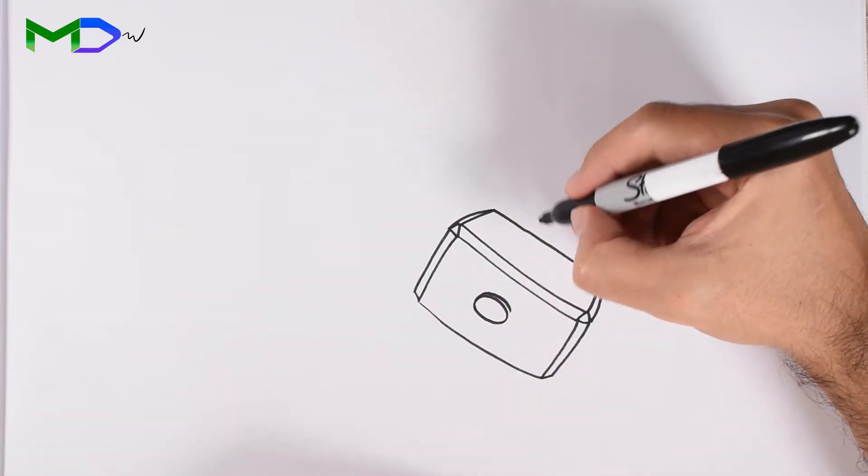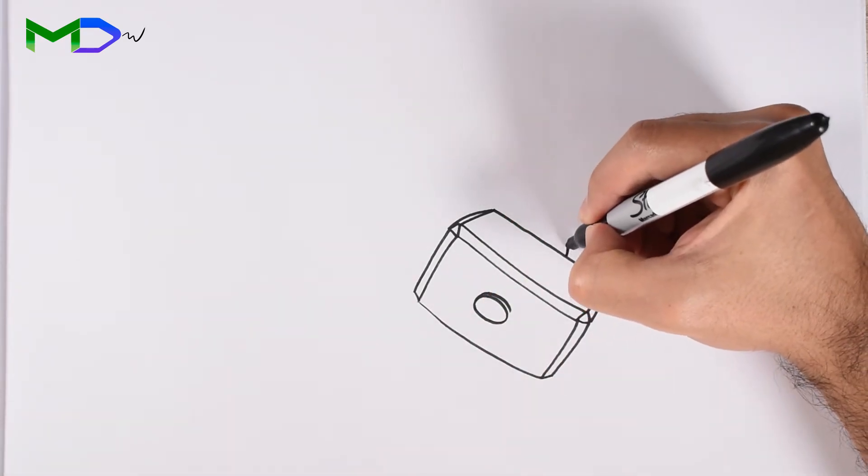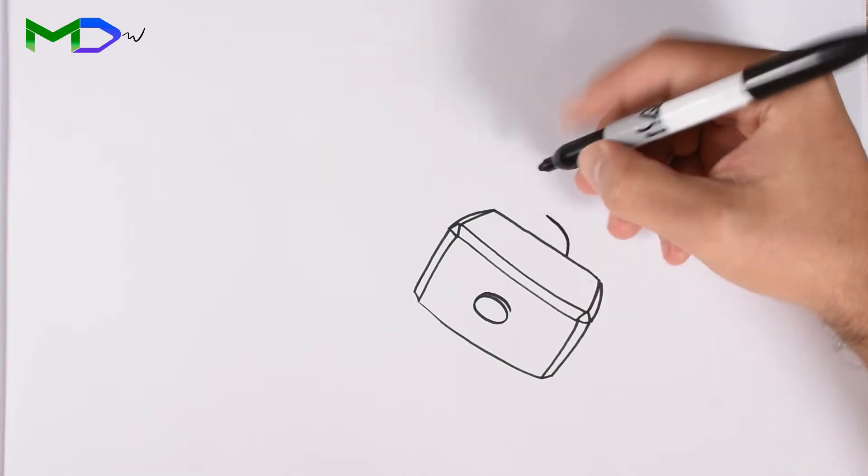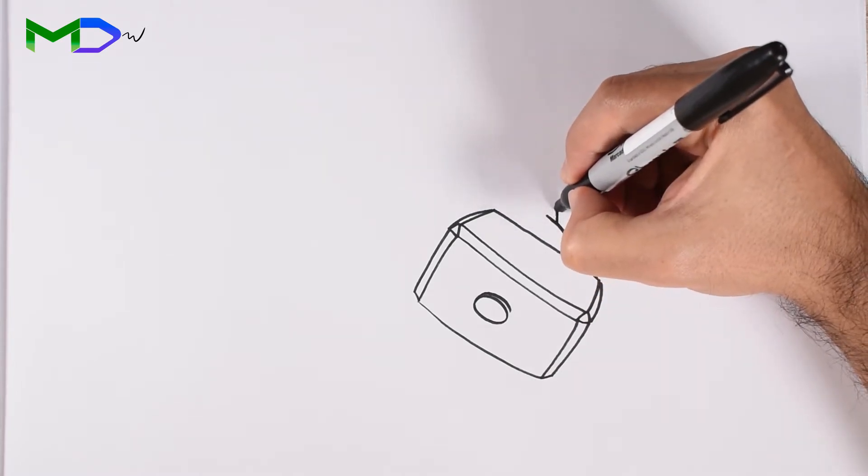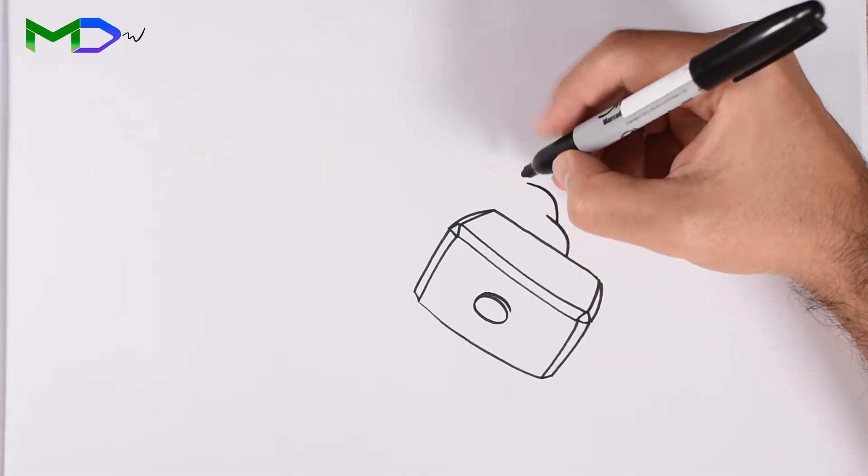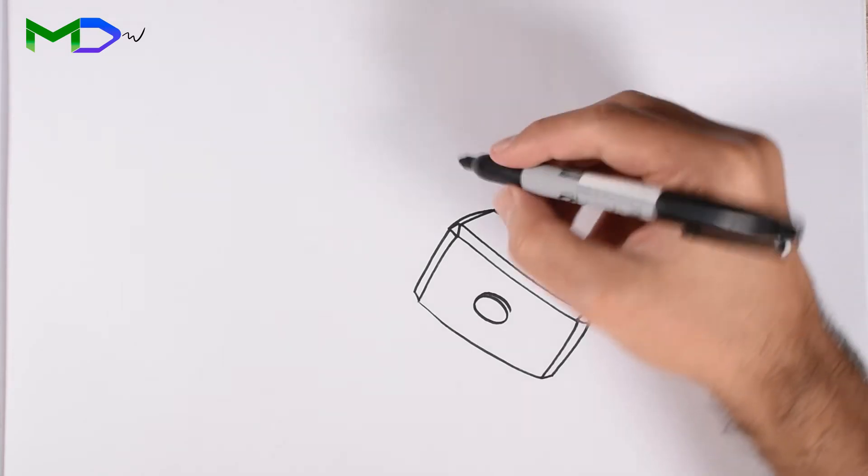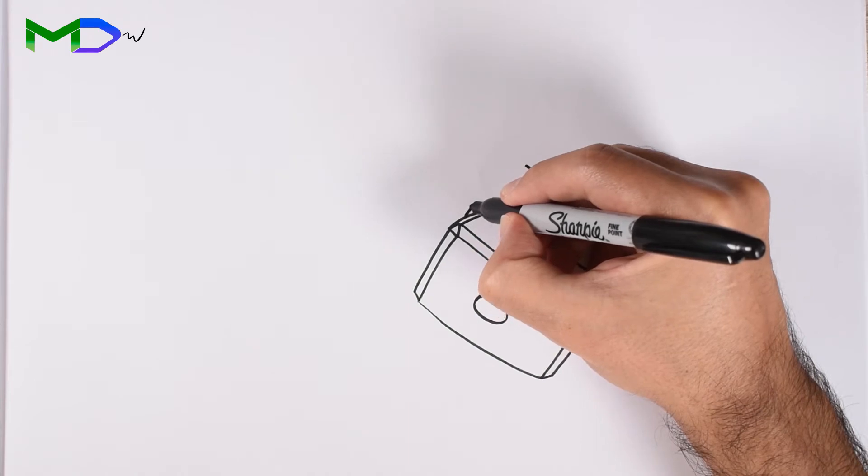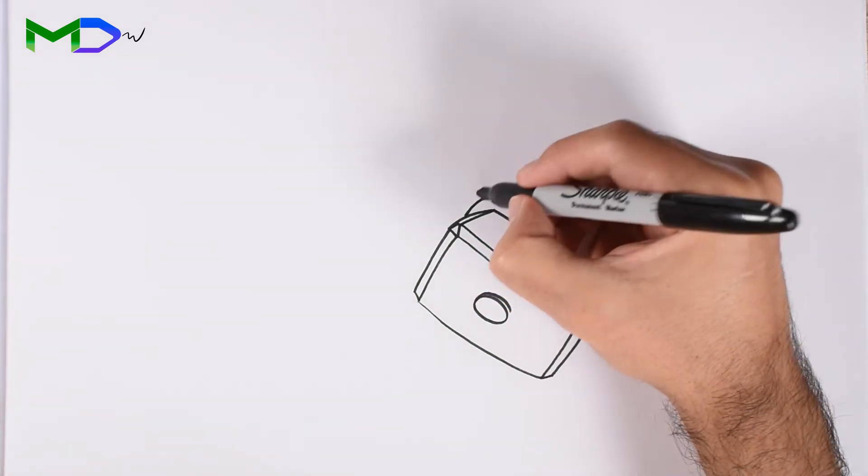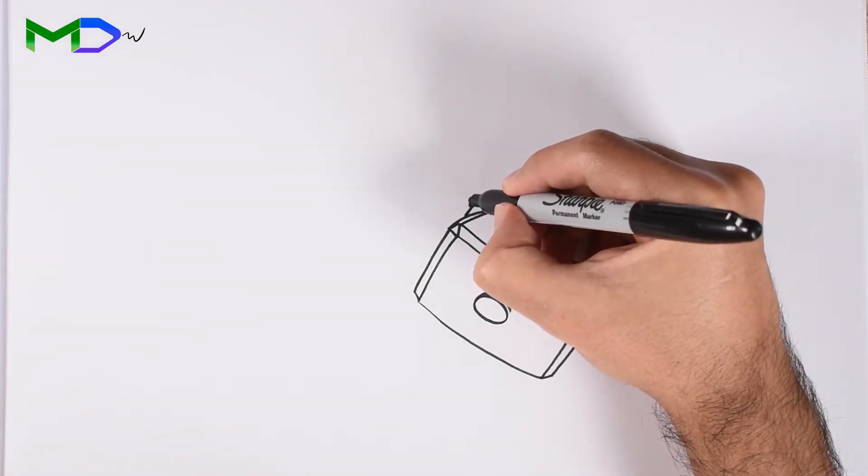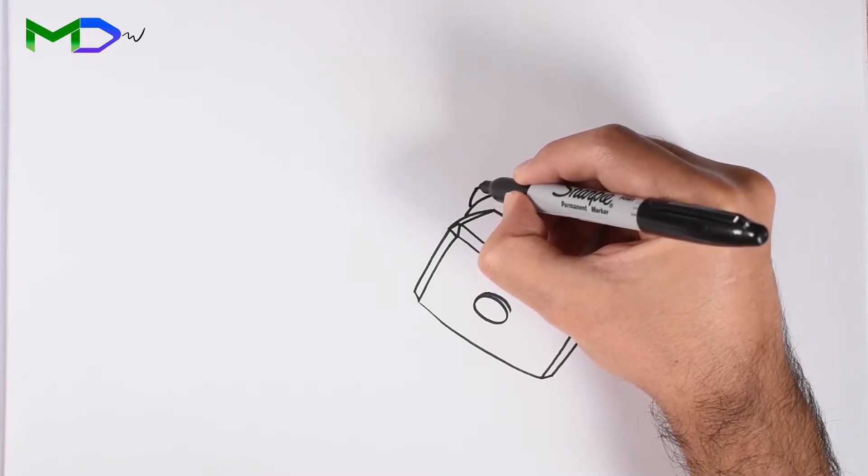Now from this part, let's do the arm. Some lines to create the arm shape to the shoulder. Another one for the bicep and connect to finish the shoulder.